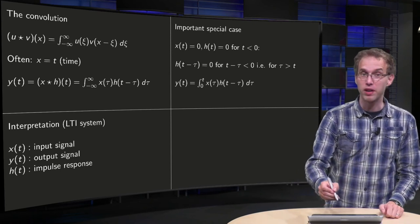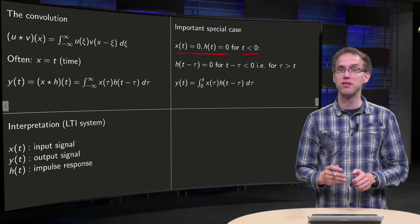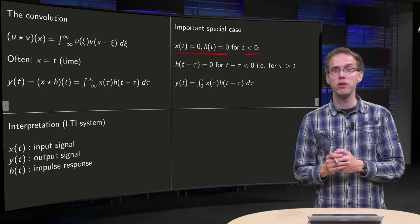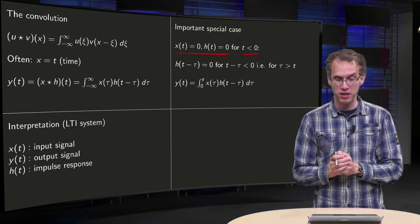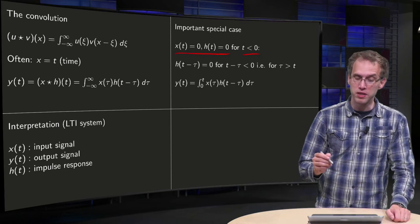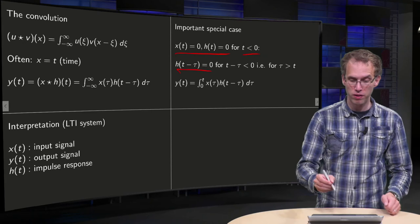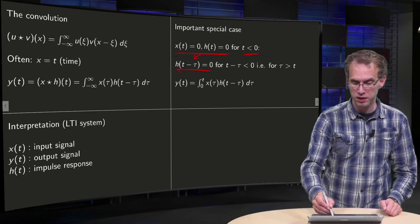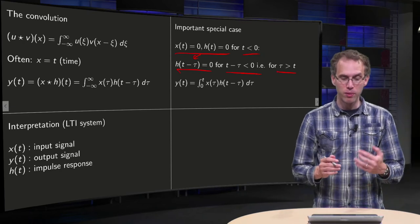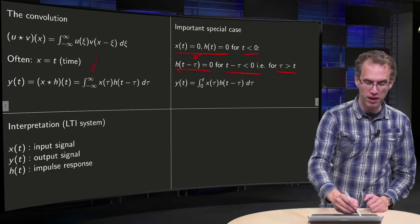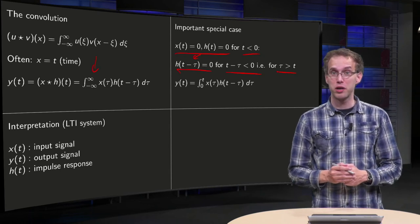for that one we will look at an important special case. If we have for example that our functions are zero if t is negative, functions only are non-zero for positive time. That means in particular that the h of t minus tau is zero if the argument over here, t minus tau is negative, so that means it is zero if tau is bigger than t. Now what happens then to our integral over here? The functions are zero if the arguments are negative.